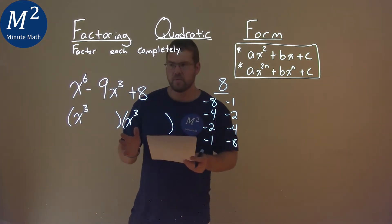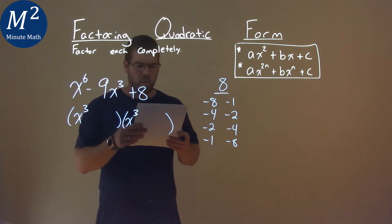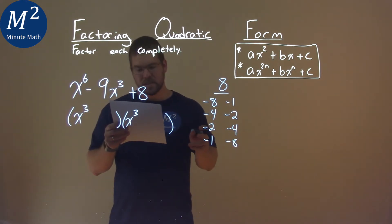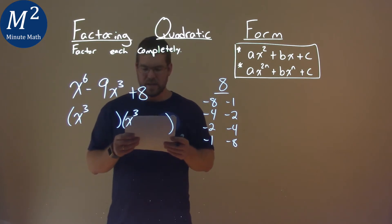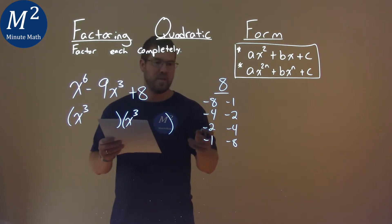So now we have to ask ourselves, which two numbers multiplied together add to be a negative 9. And it doesn't really matter the top or the bottom one, it's negative 8 and negative 1.